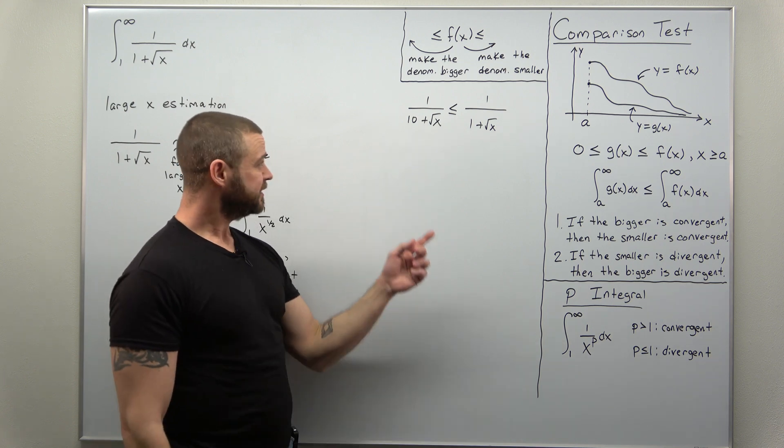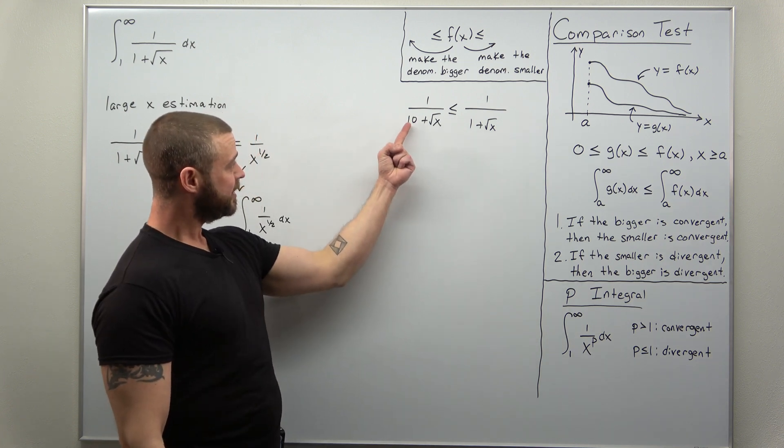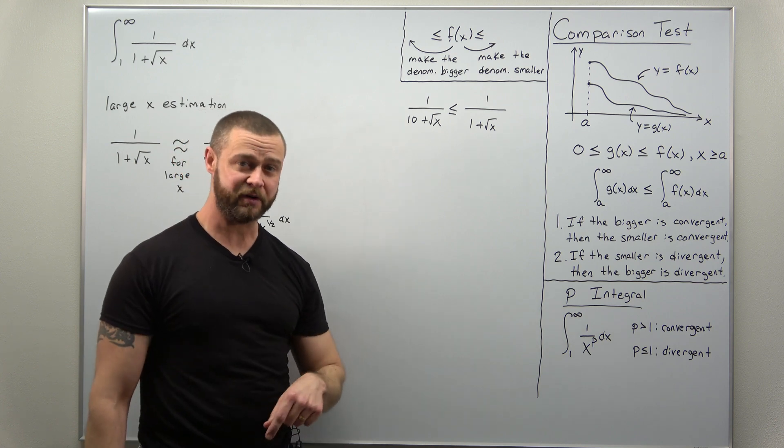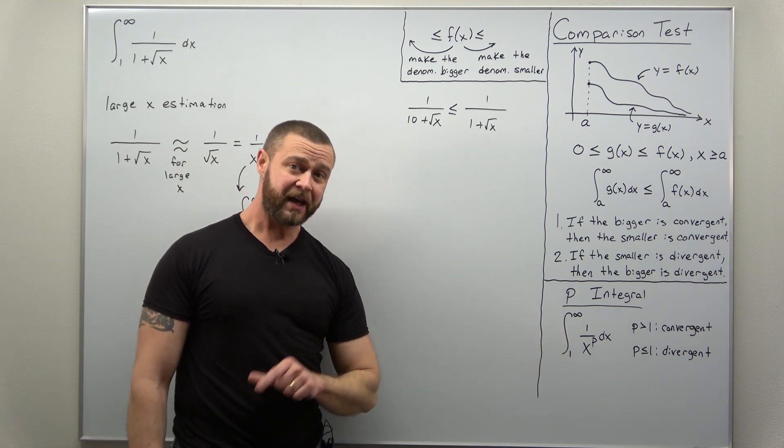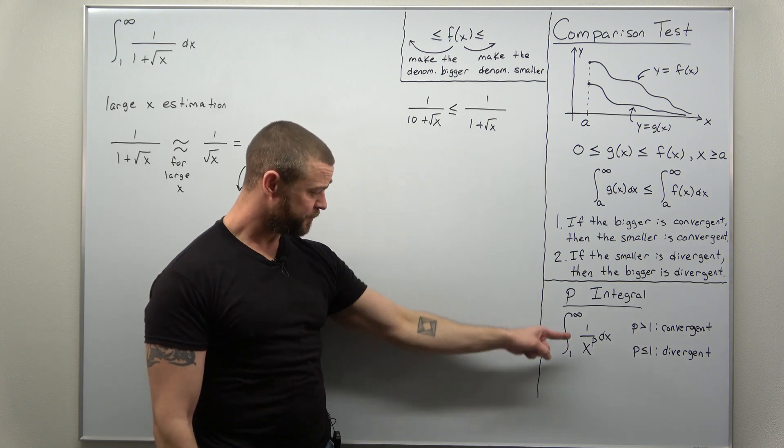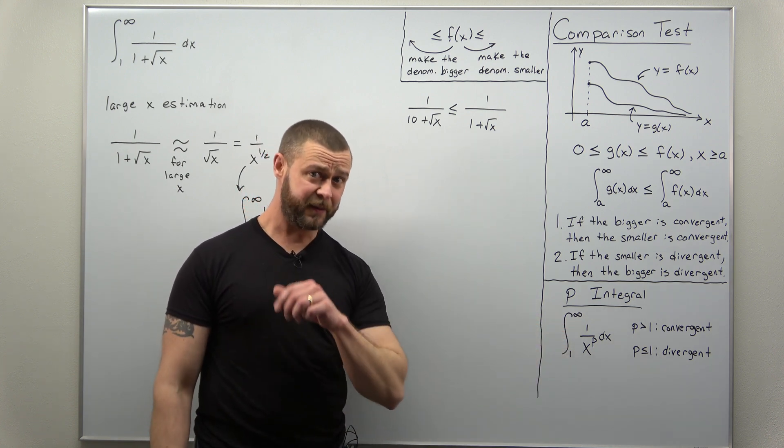Now this really gives you the same type of function. You have a constant plus square root of x. We ideally want to try to get just a power of x in the denominator, so that way we can use the p integral.